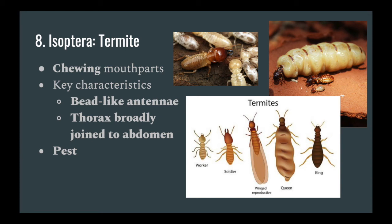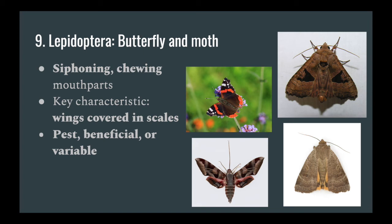Finally we have Lepidoptera, which is butterflies and moths. The identifying feature of Lepidoptera is quite literally their name, which means scaled wing. Each of their wings — which may be very many different colors, or different dull colors for moths with many patterns — are all going to be scaled, so when you touch their wings it'll appear as if some powder has come off on your finger, but that's just the scales being pulled off of their wings.